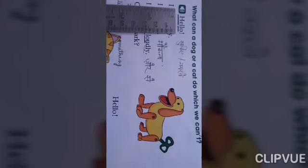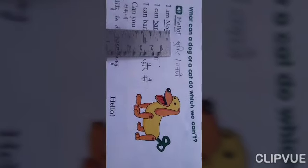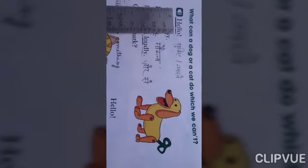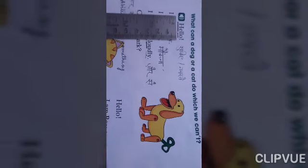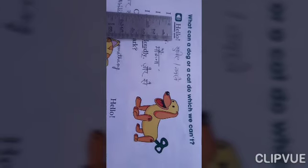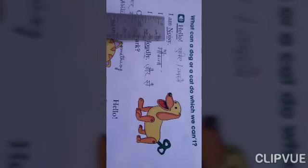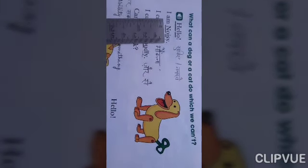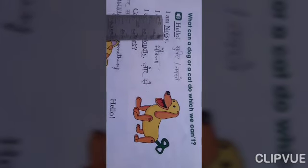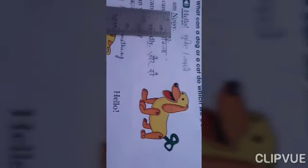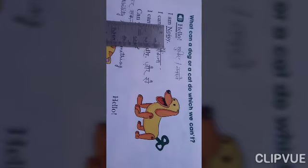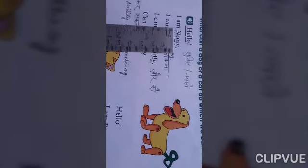So, the first word is Hello and Hello means Suniye, Namaste. Kids, Hello word, it's a greeting word. When we meet someone, we greet them and we say Hello to them. And the next word is Noisy. Kids, Noisy is the name of the dog. So, we will write N of Noisy in capital letters. Noisy means, Bohut shor karne wala.